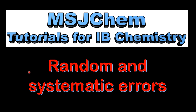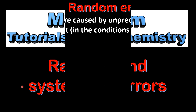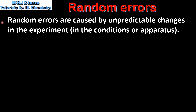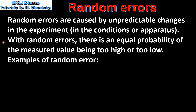This is MSJChem. In this video I'll be looking at random and systematic errors. So let's start with random errors. Random errors are caused by unpredictable changes in the experiment, either in the conditions or the apparatus. With random errors there is an equal probability of the measured value being too high or too low.